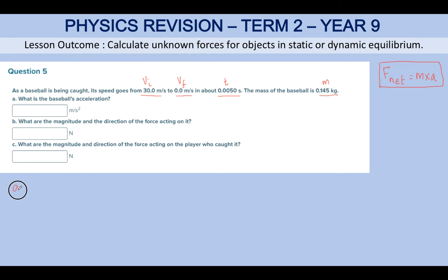Part A asks you to find acceleration. We substitute the formula: acceleration equals change in velocity—final minus initial—upon the time taken, Δt.